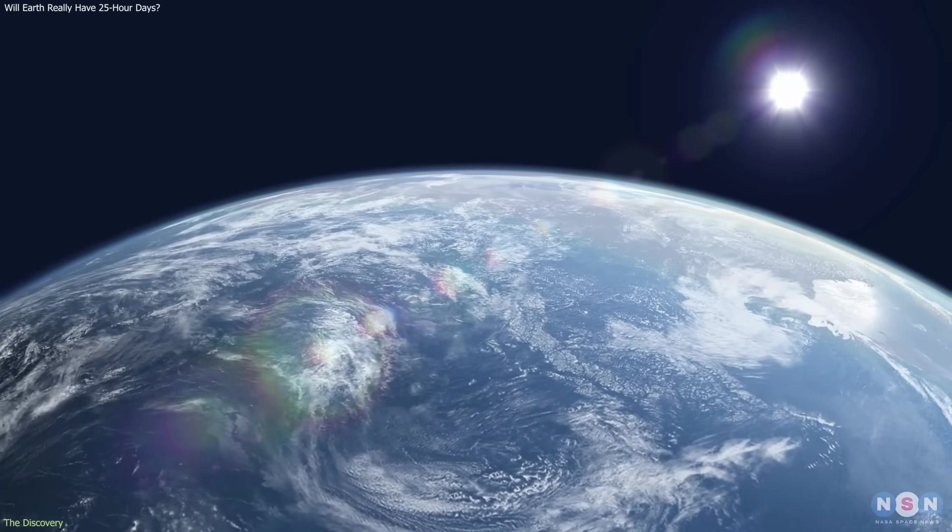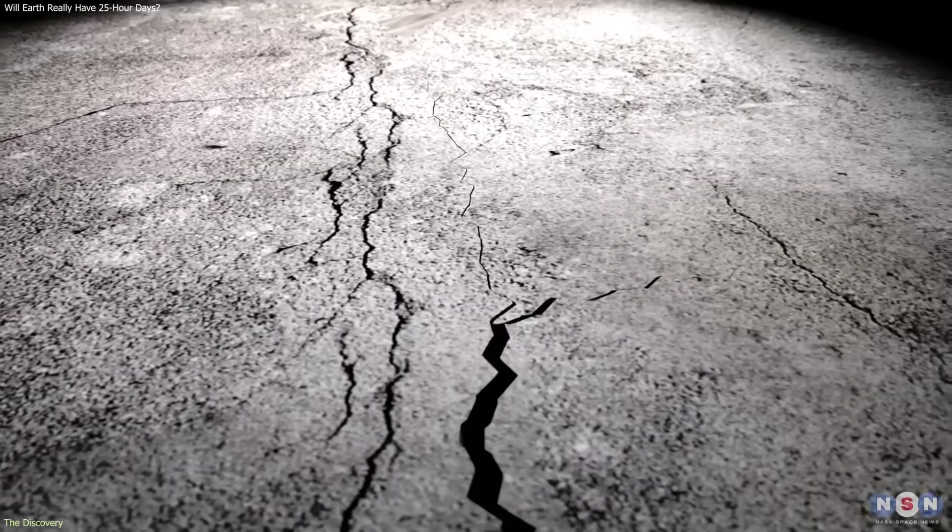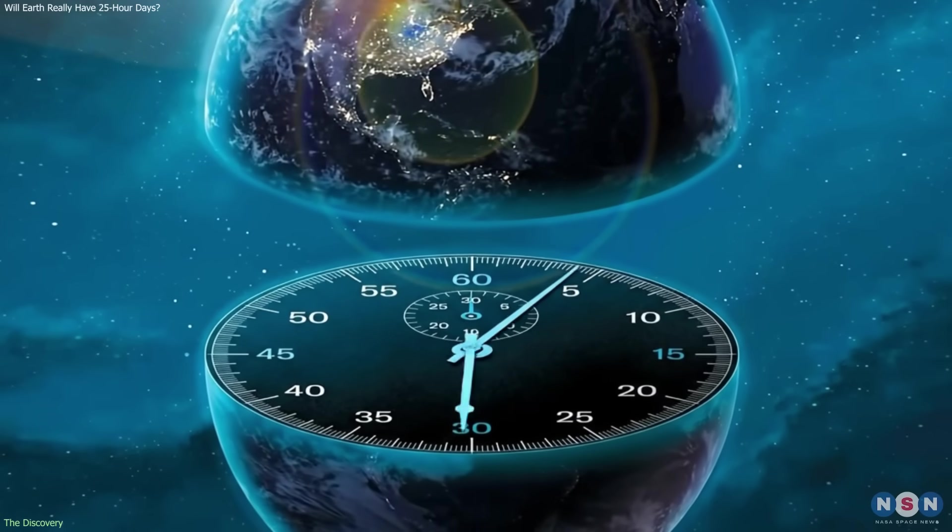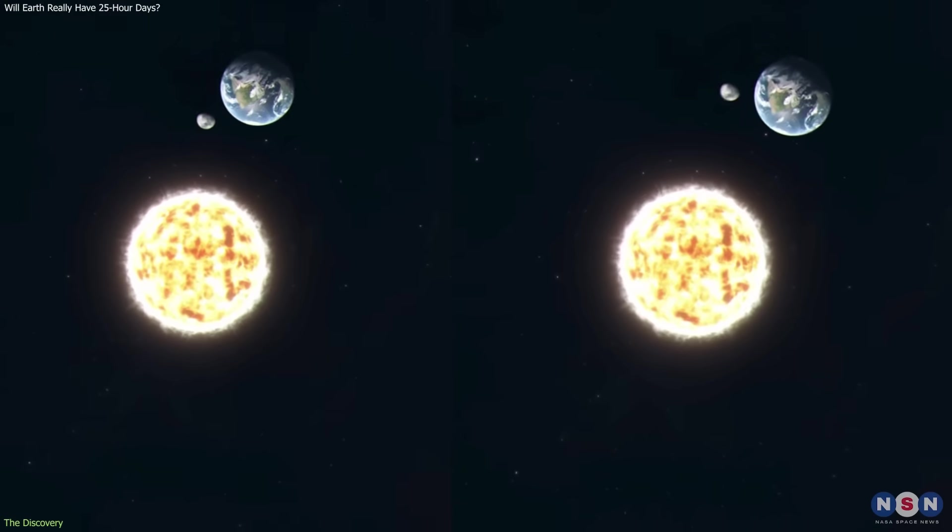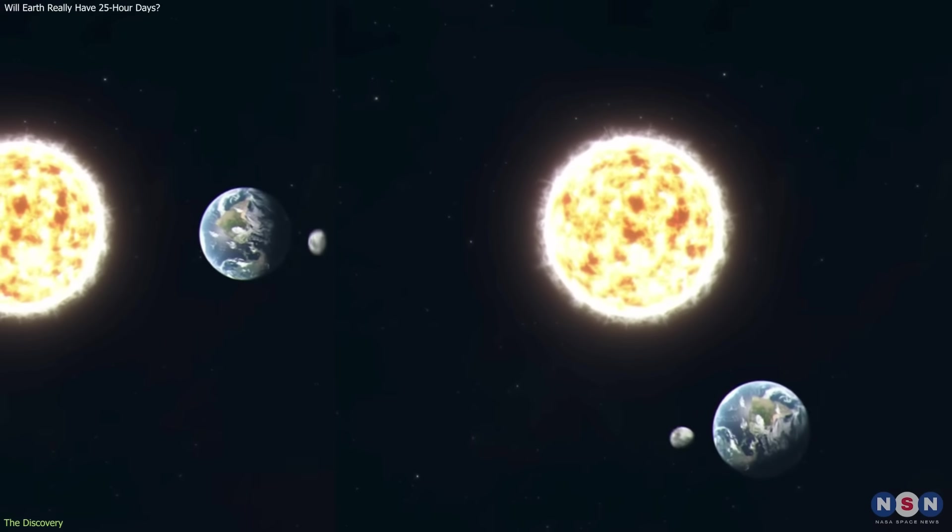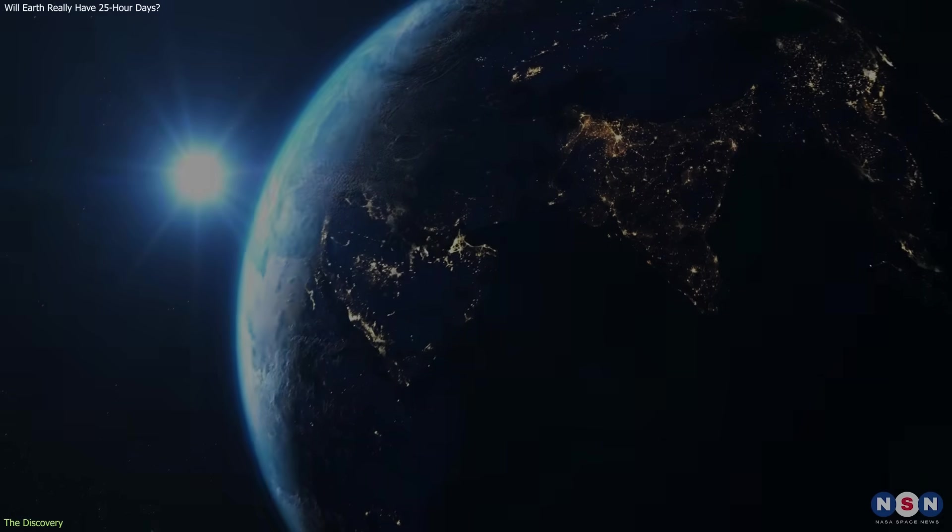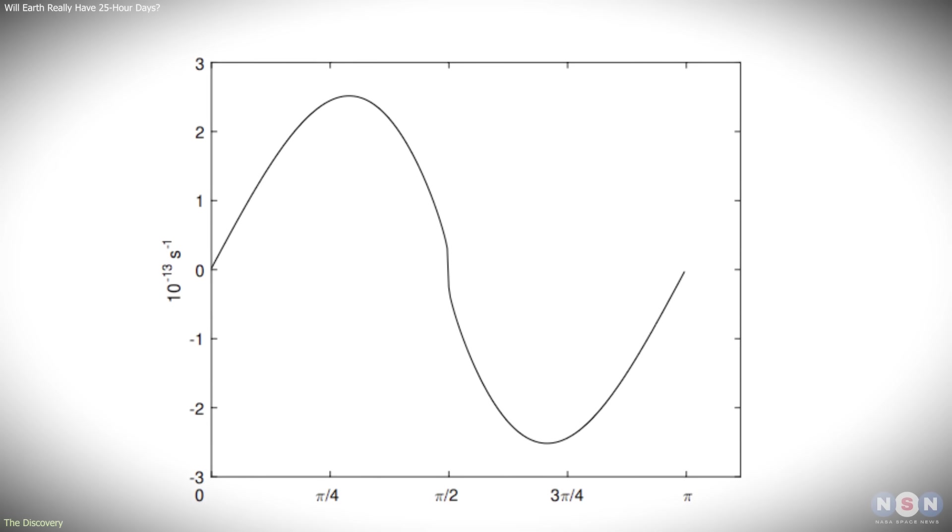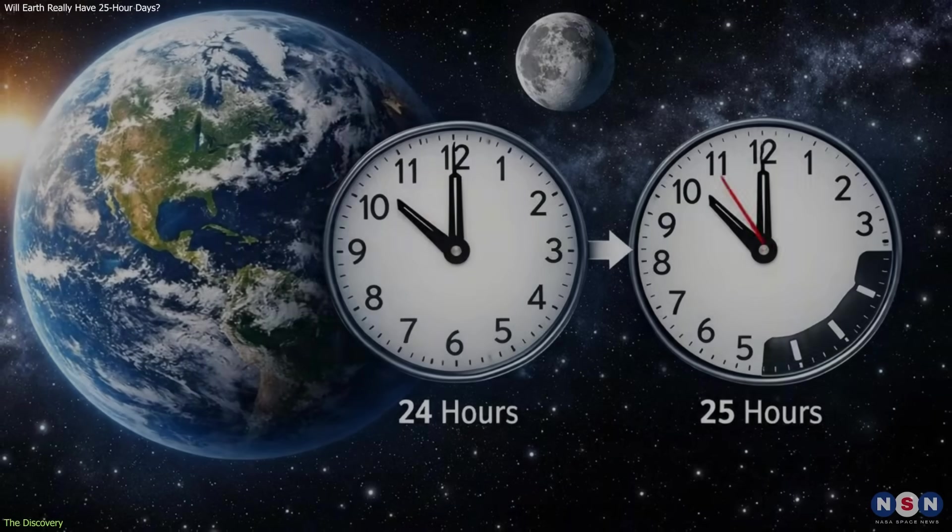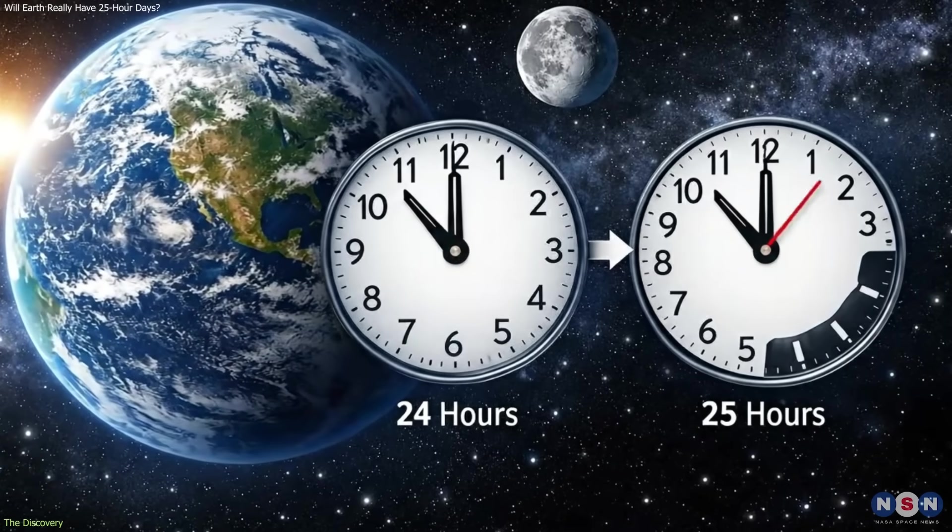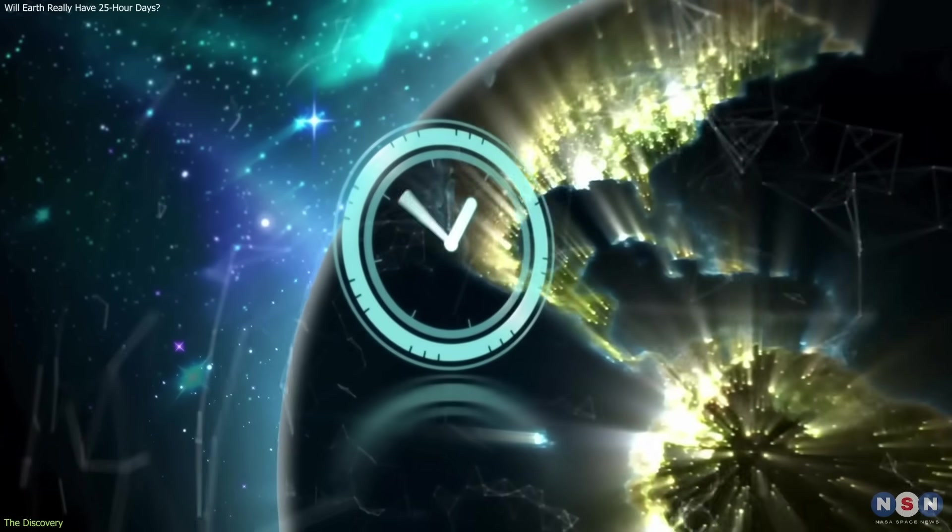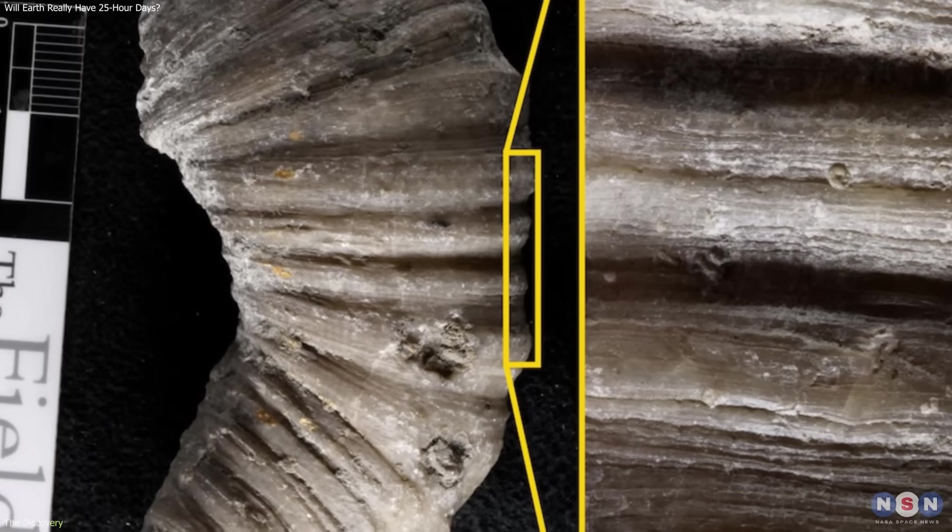Atmospheric winds, ocean currents, earthquakes, and interactions between Earth's core and mantle all cause short-term variations. Some years are slightly shorter than average, others slightly longer. These fluctuations are normal and expected. When data is averaged over decades and centuries, however, a clear trend emerges. Over long periods, Earth's days are gradually getting longer. This conclusion is supported not only by modern measurements, but also by geological evidence.